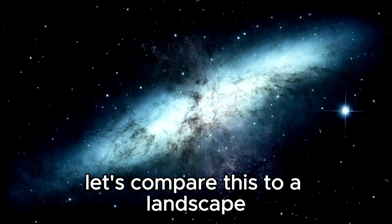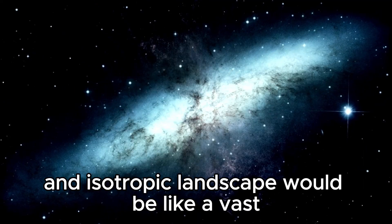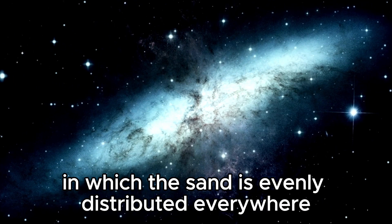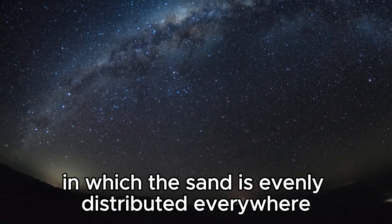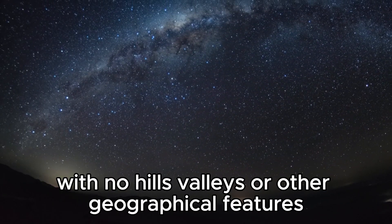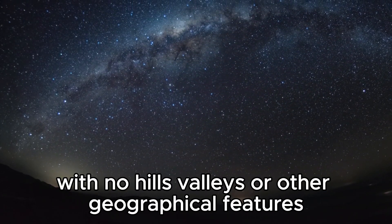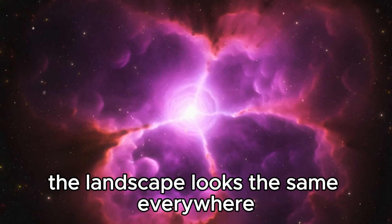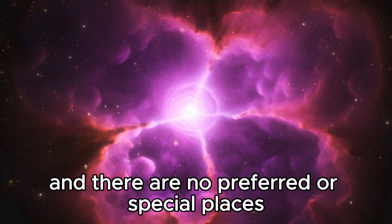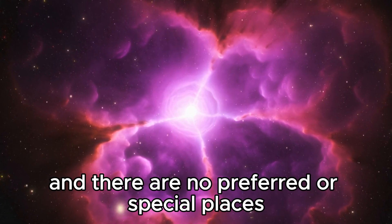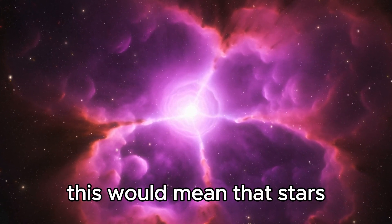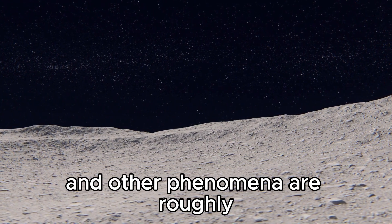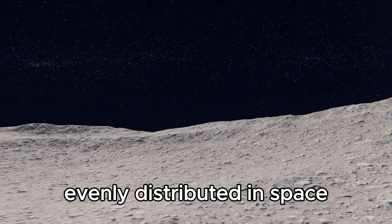Let's compare this to a landscape. A homogeneous and isotropic landscape would be like a vast, endless desert in which the sand is evenly distributed everywhere, with no hills, valleys, or other geographical features. No matter which direction you look or where you go, the landscape looks the same everywhere, and there are no preferred or special places. In the case of the universe, this would mean that stars, galaxies, cosmic nebulae, and other phenomena are roughly evenly distributed in space.